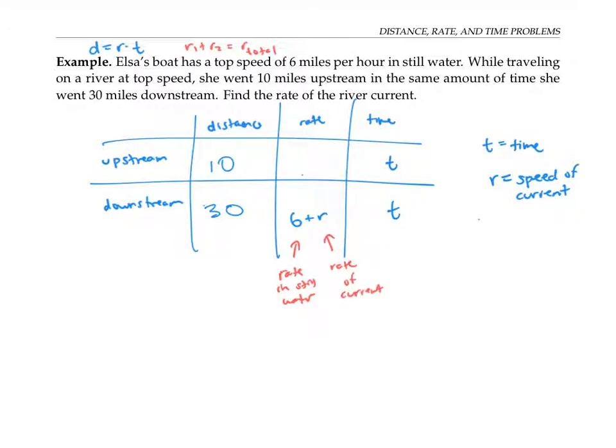On the other hand, when she's going upstream, then she's going against the current. So her rate of six miles per hour, we need to subtract the rate of the current from that.